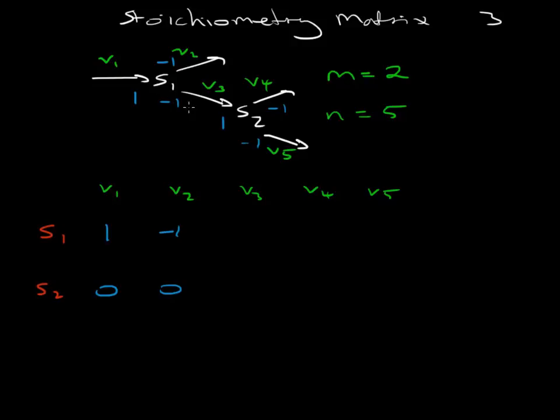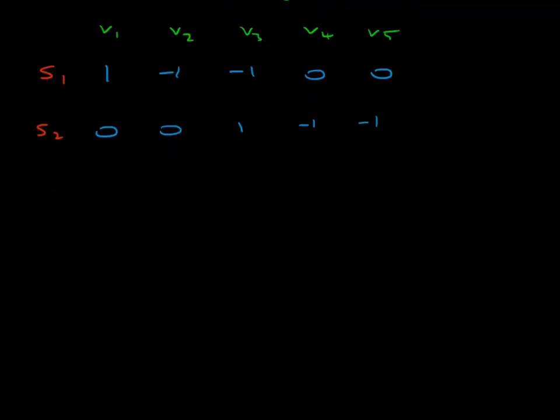V3 involves two stoichiometric coefficients, minus one on S1 and a plus one on S2. And finally, V4 and V5, they both have the same pattern. They don't involve S1 at all, but S2 has stoichiometric coefficients of minus one and minus one. And that's the stoichiometry matrix for that model.